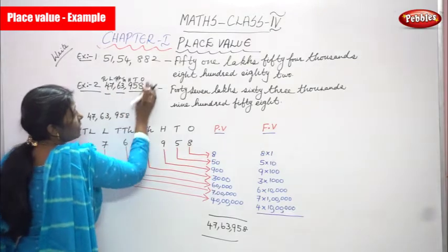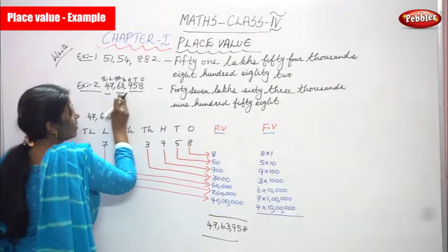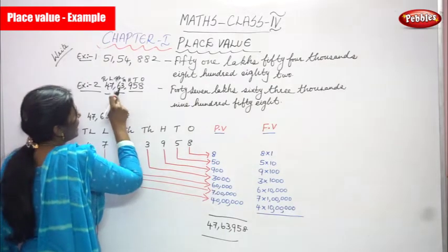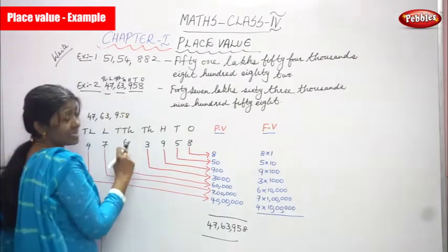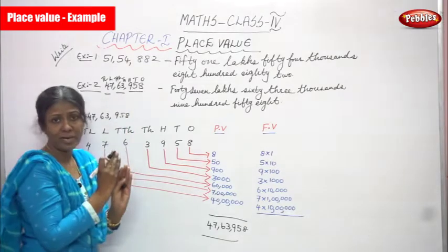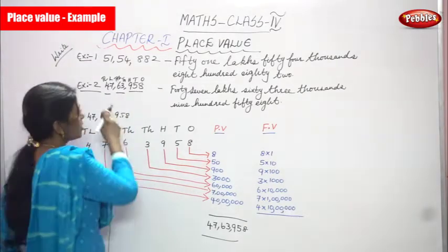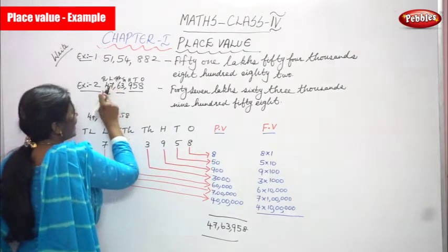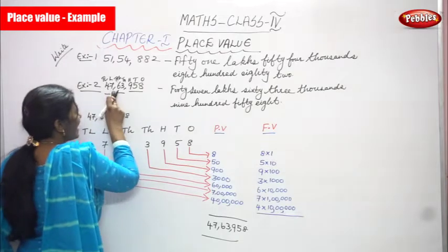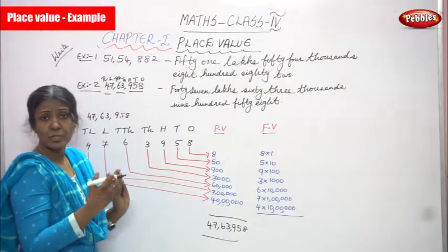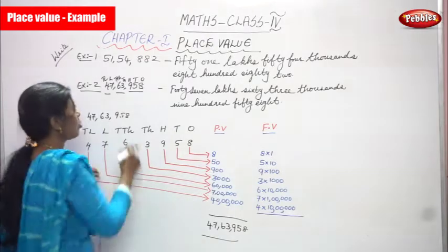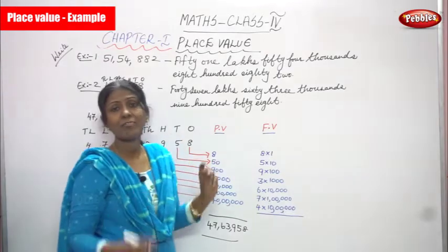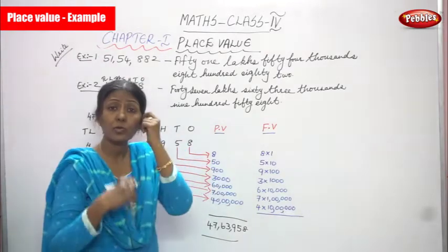We've completed the ones period. Moving to the thousands period: thousands place is 3 and ten-thousands place is 6, giving sixty-three thousand. Then in the lakhs period: lakhs place is 7 and ten-lakhs place is 4, giving forty-seven lakhs. So the full reading is forty-seven lakhs, sixty-three thousand, nine hundred and fifty-eight.